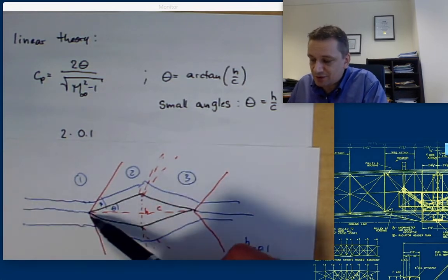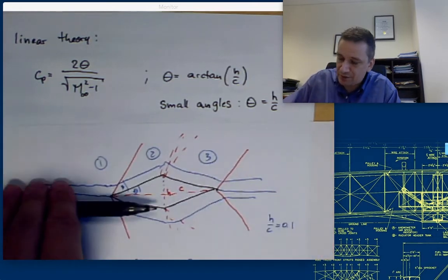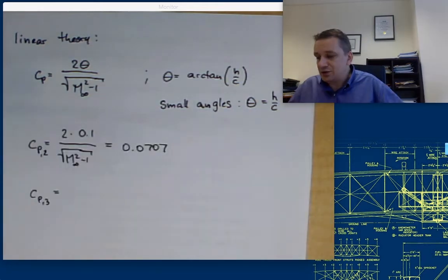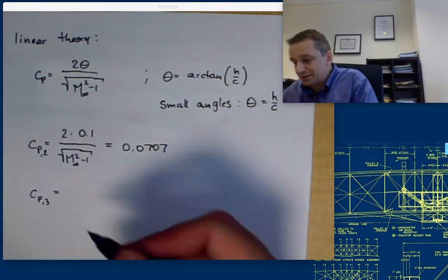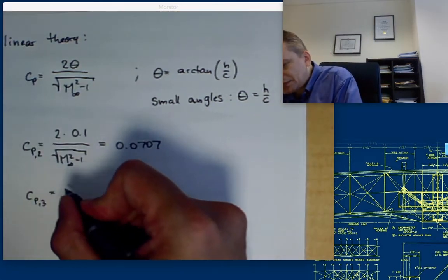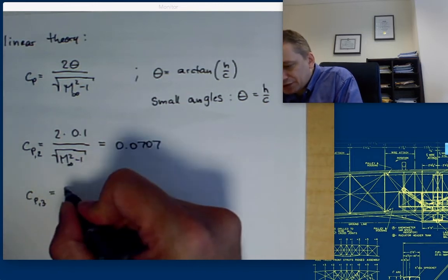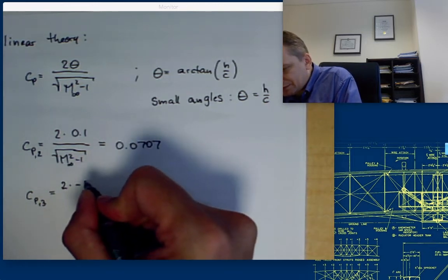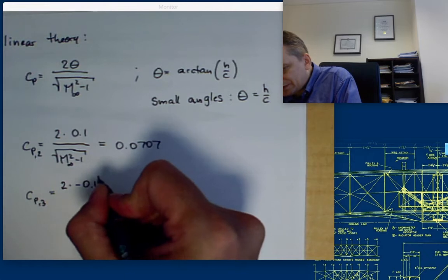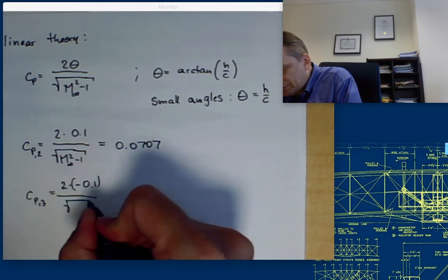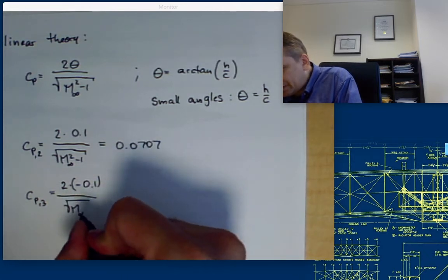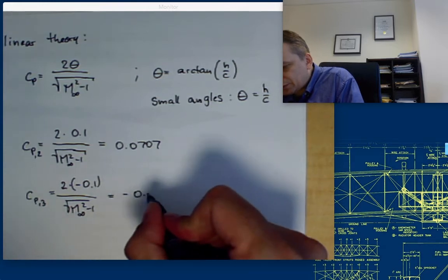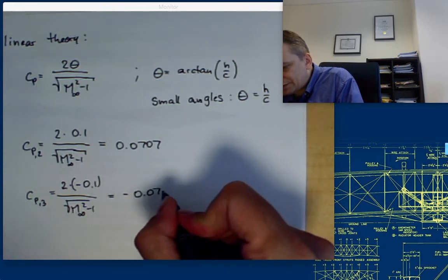The free stream here is at 0 degrees, and this angle here is 5.7 degrees, so you just need to use that. So Cp at the expansion is going to be 2 times minus 0.1 over M infinity squared minus 1. That's going to be minus 0.0707.